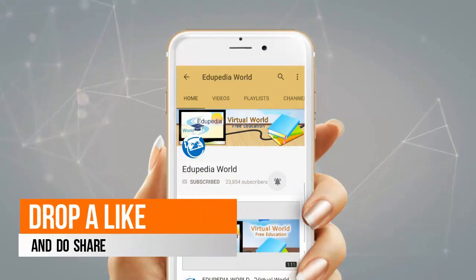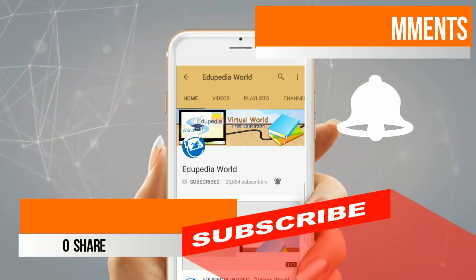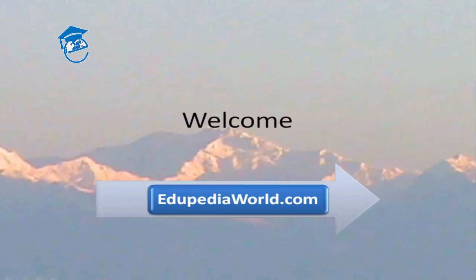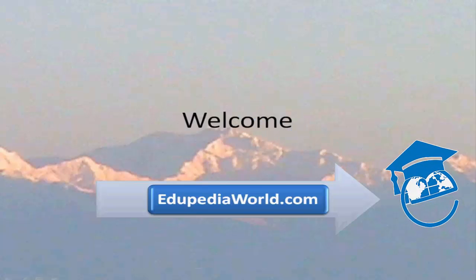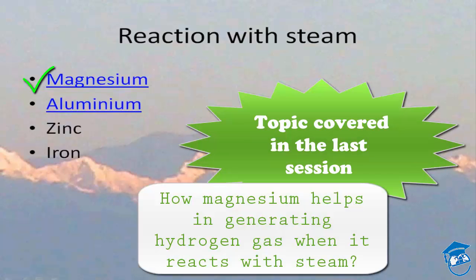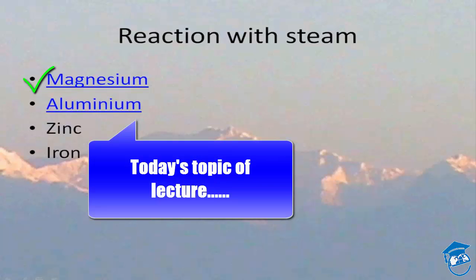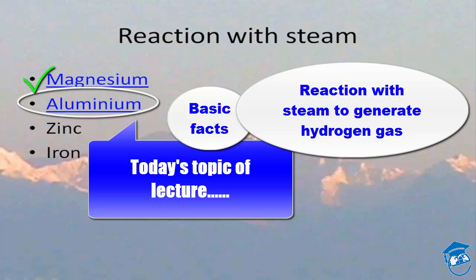Drop a like, share, leave your comments, and do not forget to subscribe for more videos. Hello friends, and welcome to Edupedia World, your destination for online education. In the last session we learned how magnesium helps to generate hydrogen gas when it reacts with steam. Today in this session we shall also learn the basic facts of aluminium and the reaction of aluminium with steam to generate hydrogen gas.